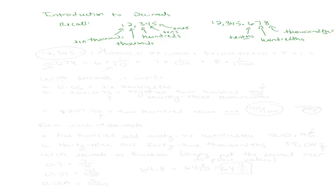Recall when we looked at what place values mean: with 12,345, if we took each digit times its place value — one times 10,000, plus two times 1,000, plus three times 100, plus four times 10, plus five times one — we would get back to 12,345. That is the point of place values; that's how we come up with numbers.